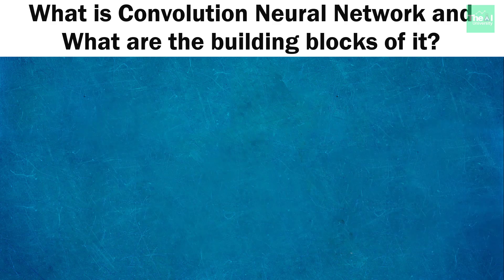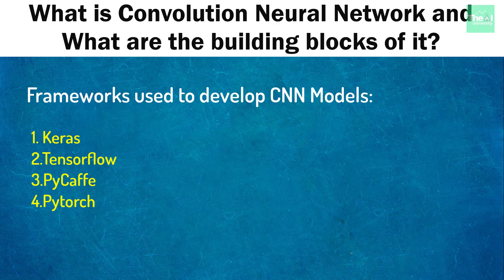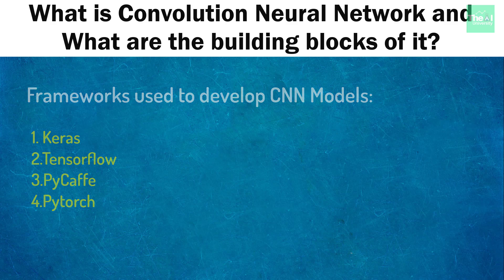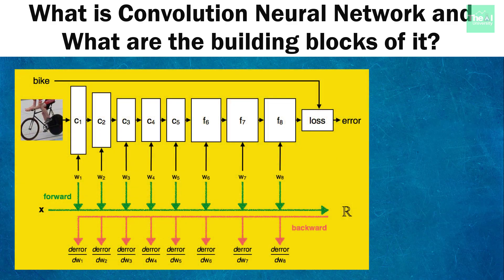We will be using frameworks like Keras and TensorFlow to build these models. Some people build neural network models using frameworks like PyTorch, Caffe, etc. So let me quickly tell you on a high level how these CNNs work. CNNs, like neural networks, are made up of neurons with learnable weights and biases. Each neuron receives several inputs, takes a weighted sum of them, passes it through an activation function, and responds with an output. The whole network has a loss function, and all the tips and tricks that we developed for neural networks still apply to CNNs.